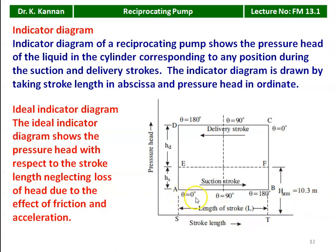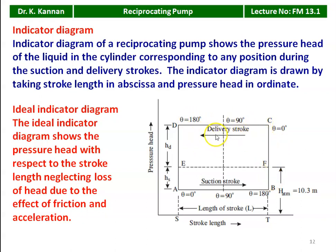At 0° crank angle, the piston is at the inner dead center (IDC), the extreme left position. As the piston moves toward point B (suction stroke, A to B), the pressure inside is below atmospheric pressure and the water is completely drawn into the cylinder. At 0° from the outer dead center, the delivery stroke begins (C to D): pressure increases and water is delivered at higher pressure head above atmospheric pressure. HD is the pressure head above atmospheric pressure during delivery.